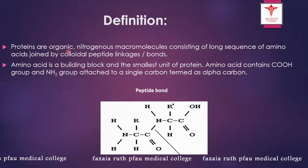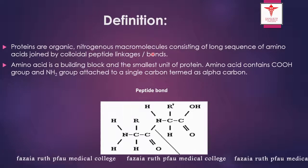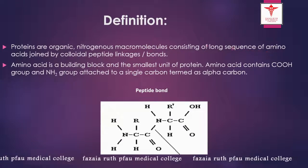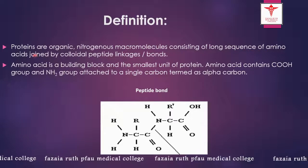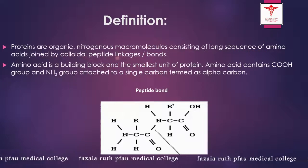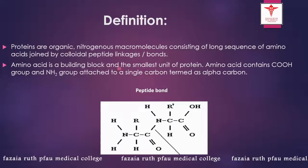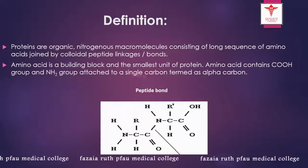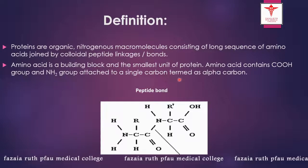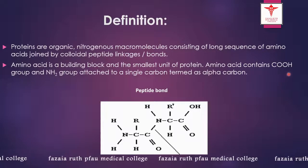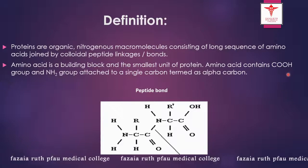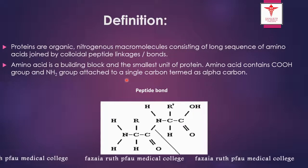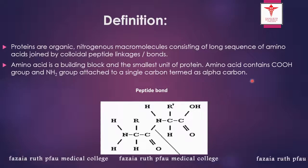Proteins are organic nitrogenous macromolecules consisting of long sequences of amino acids joined by peptide linkages or bonds. An amino acid is a building block and the smallest unit of protein. Amino acids contain a COOH group and NH2 group attached to a single carbon termed as alpha carbon.